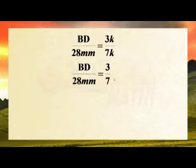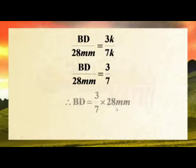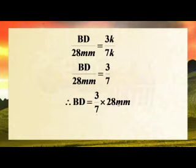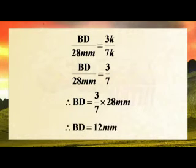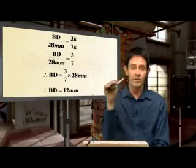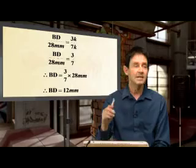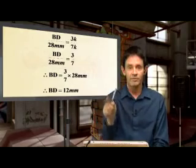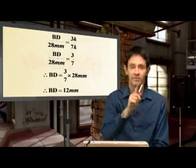The Ks cancel. And then if you look at this, we're going to multiply both sides by 28. And 3 over 7 times 28 gives you 12 millimeters. Which makes perfect sense. So you see — the ratios work.